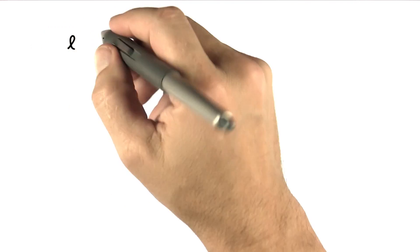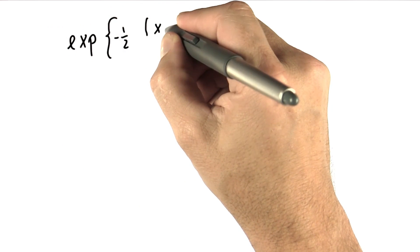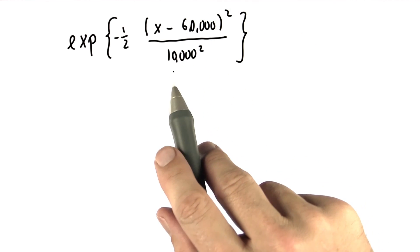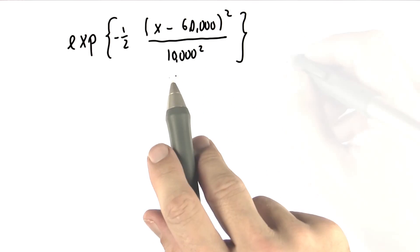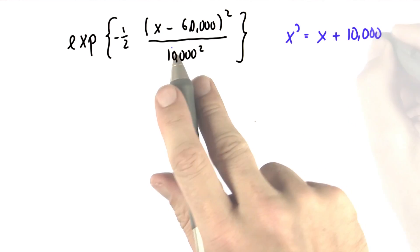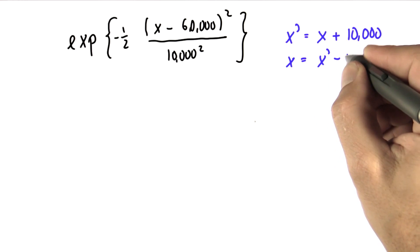In our normal, ignoring the normalization constant, we know that everyone's salary is drawn from a distribution that looks like this. This is plugging in the mean and the variance as I defined it. And now we know we set the new salary, x', to be the old salary plus 10,000. That is the same as saying that the old salary is the new salary minus 10,000.